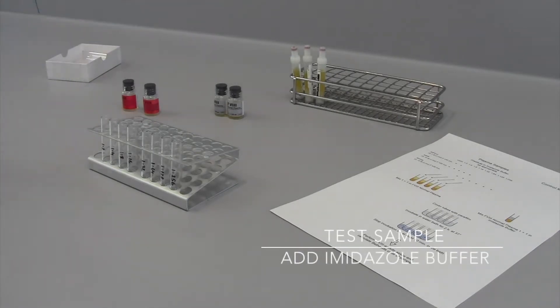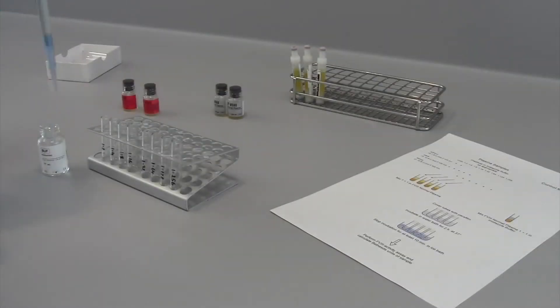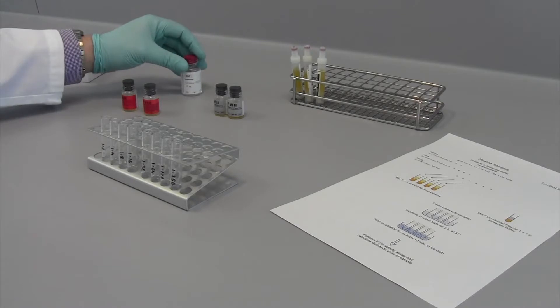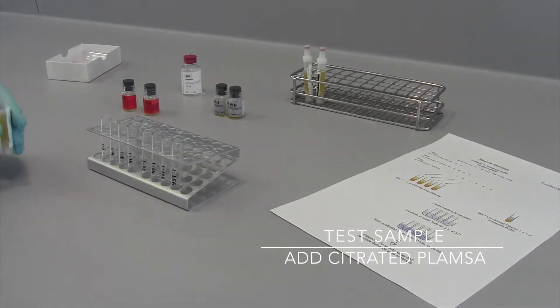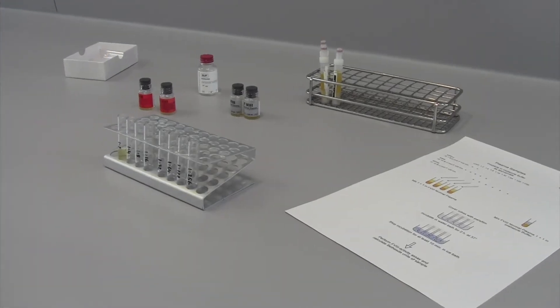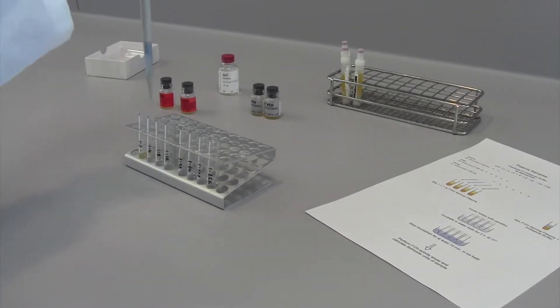Please pre-label the tubes and add 500 microliters of imidazole buffer to each dilution tube. Thereafter, add 500 microliters of sample plasma to the first dilution tube. Now, continue the dilution by transferring equal volumes from tube to tube. Please ensure adequate mixing.